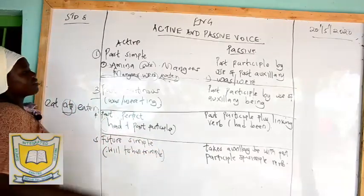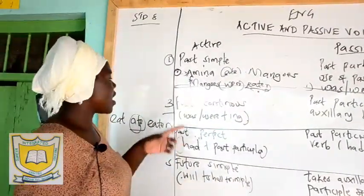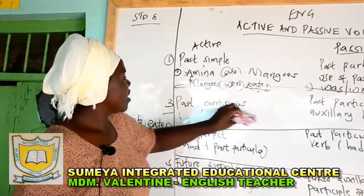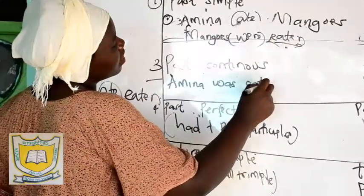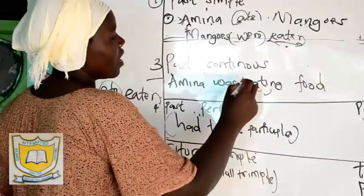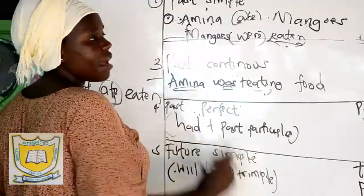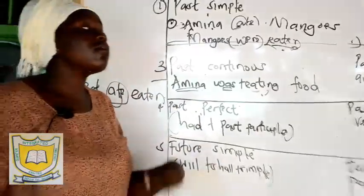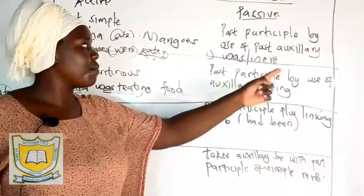Our next one is the past continuous tense. How do you form the past continuous tense? The past continuous tense is formed by 'was' (singular) or 'were' (plural), by use of '-ing'. For example in a sentence, I can say: Amina was eating food. You look at my sentence — I'm having 'was' plus 'eating', where 'was' is singular, referring to Amina, which is a singular subject. So if you want to change the past continuous tense from the active voice into the passive, you change the past continuous to a past participle by use of auxiliary 'being'.